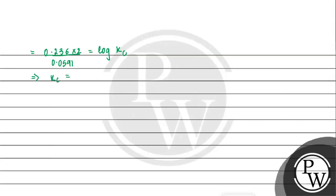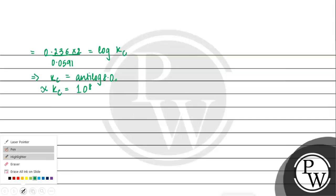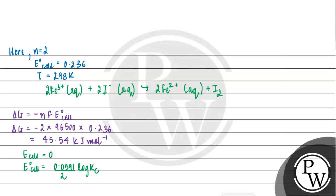So the Kc value is 10 to the power 8. So Kc will be 10 to the power 8. Let me highlight it. Our equilibrium constant value is 10⁸, and our ΔG value is -45.54 kilojoules per mole. I hope you understood the question well. Best of luck.